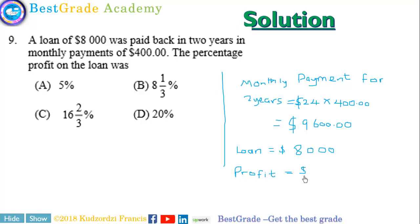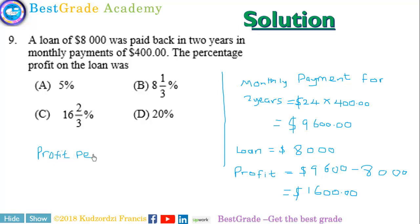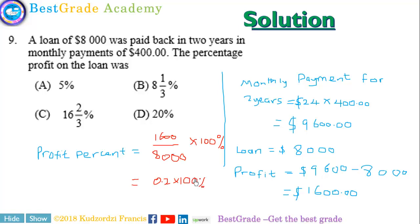The person ends up paying $9,600, so the loan brings a profit of $9,600 minus $8,000, giving $1,600. Profit percent equals profit over the actual amount, which is $1,600 over $8,000, times 100%. That gives us 0.2 times 100%, which is equal to 20%.